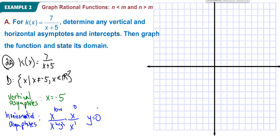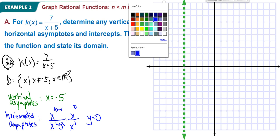I do expect you to do this on graph paper, so grab a piece of graph paper and we'll go through this. Hopefully you'll have a straight edge — in the classroom I have little pieces of cardstock I use for straight edges. So we'll put in the vertical asymptote at x equals negative 5, and the horizontal asymptote at y equals 0, which I'll draw in blue.